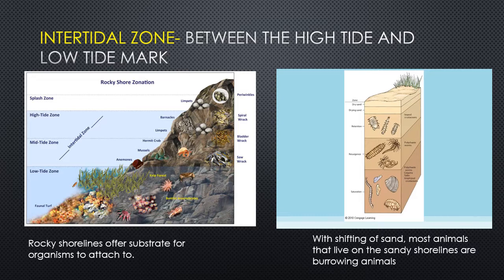In the intertidal zone, particularly on sandy shores, there are a lot of grasses to prevent sand from shifting and washing away. Seagrasses are significant for stabilization, and you see this in the dunes as well — it's all to keep that sand from shifting.